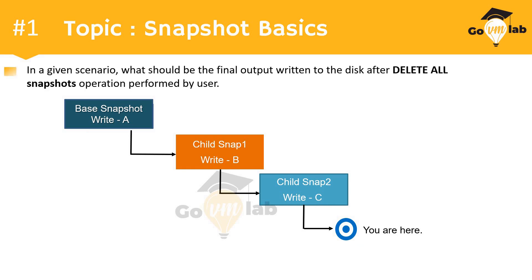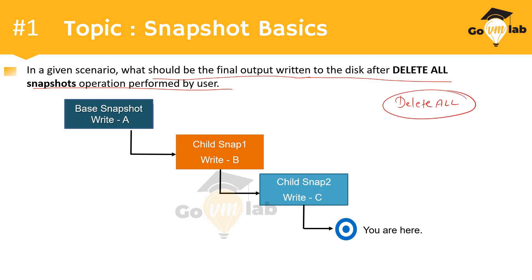Now let's understand the question. The question asks: in the given scenario, what would be the final output written to the disk after a delete all snapshot operation is performed? You all know there is an operation called delete all. The question is: given this snapshot chain or snapshot tree, when you as a VMware administrator perform the delete all operation, what will be the end value written to the disk after successful completion? When we perform delete all, it does two things.